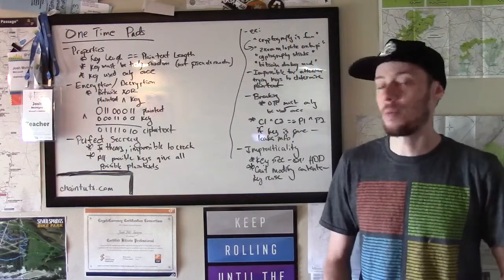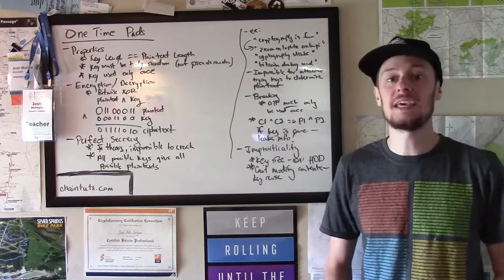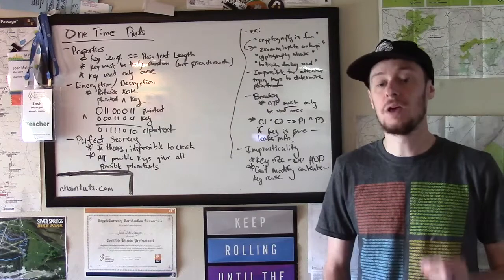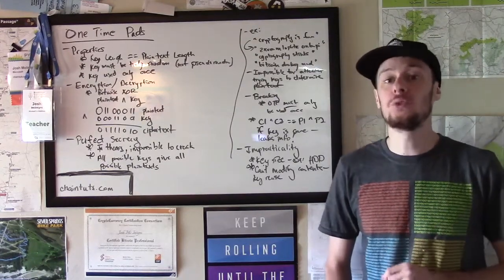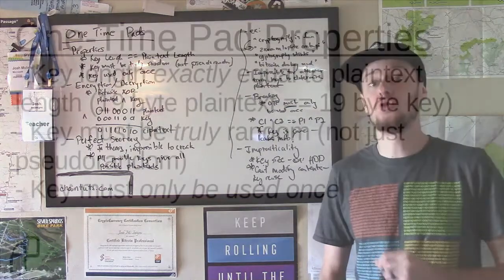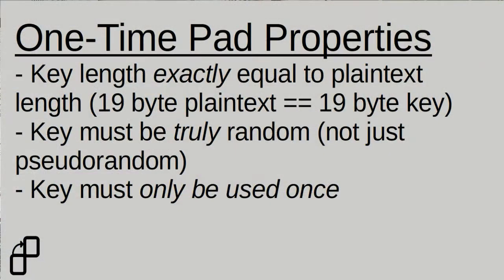The second property of the one-time pad is that the key must be truly random, not just pseudo-random. And the key must only be used once to encrypt some information, hence one-time pad. As we'll talk about later, reusing the key for a one-time pad breaks the cipher completely.